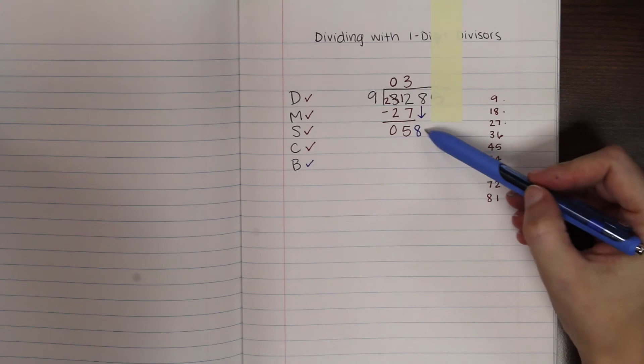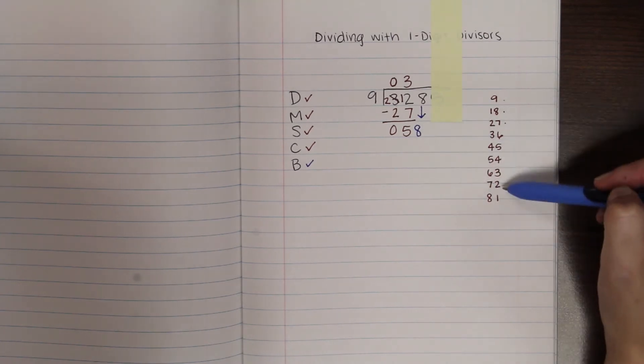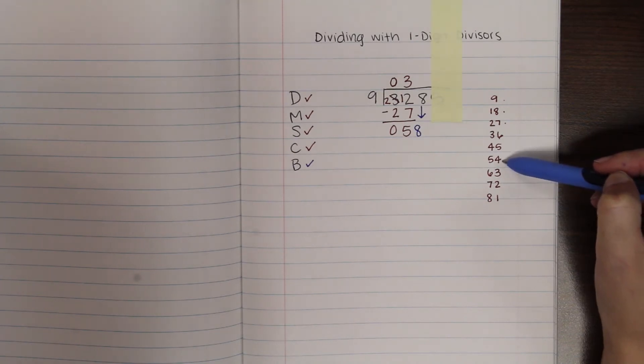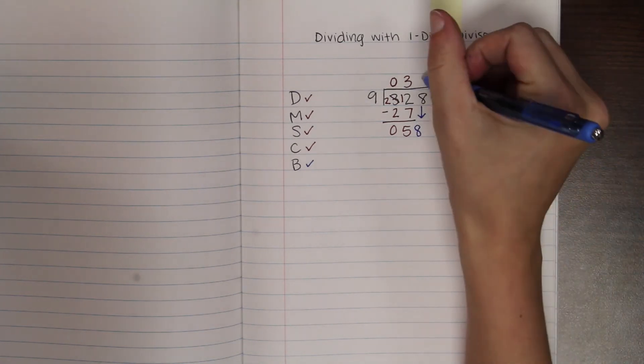Now how many times can 9 fit into 58? I'm going to look at my 9's again. I count all the way until I get over 58, which would be 63. That won't fit. So I'm going to go back down here to 54. Count 1, 2, 3, 4, 5, 6 times. 9 fits into 58 6 times.